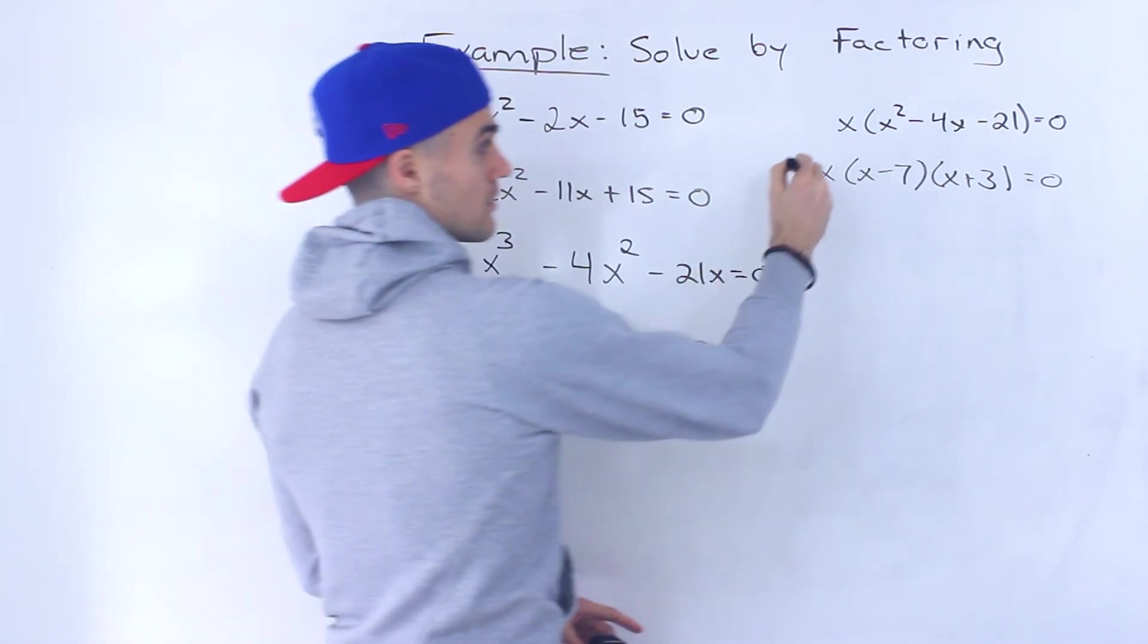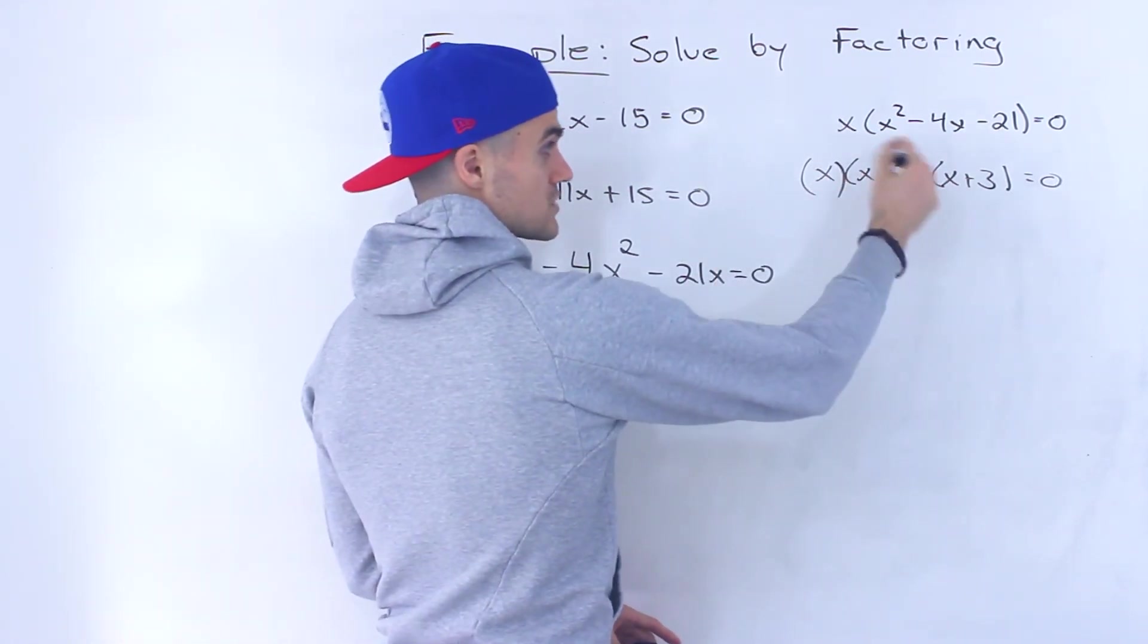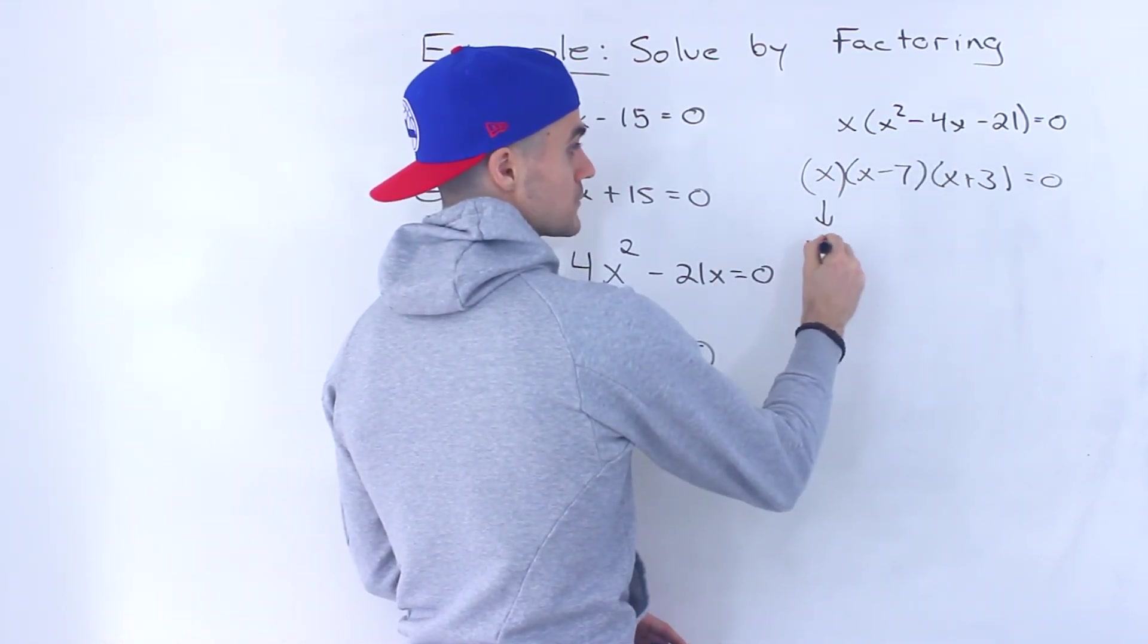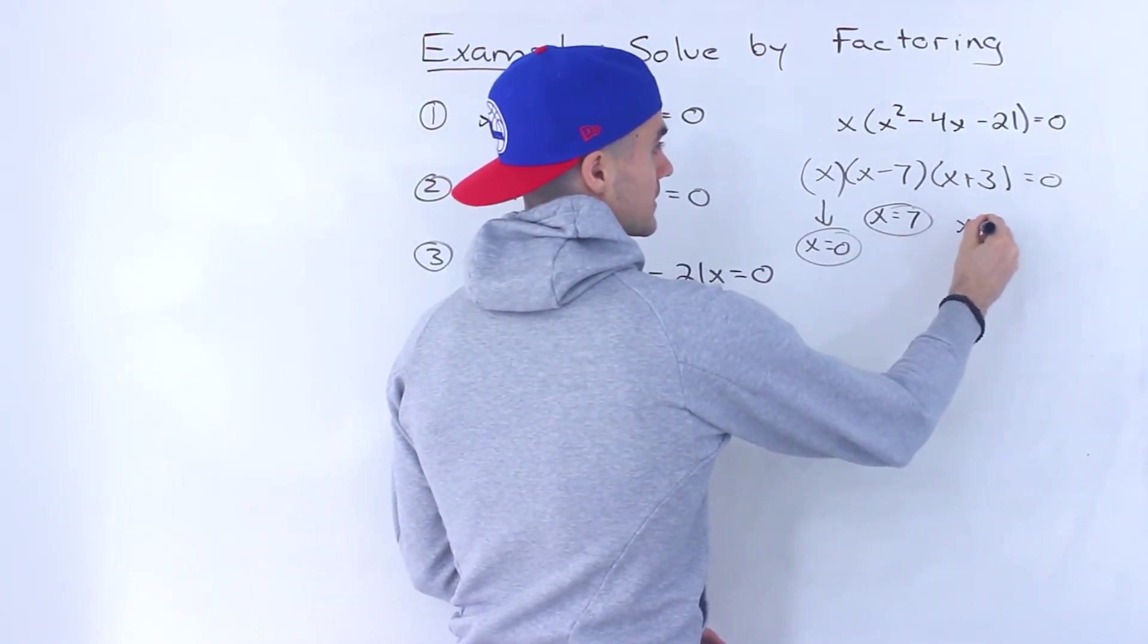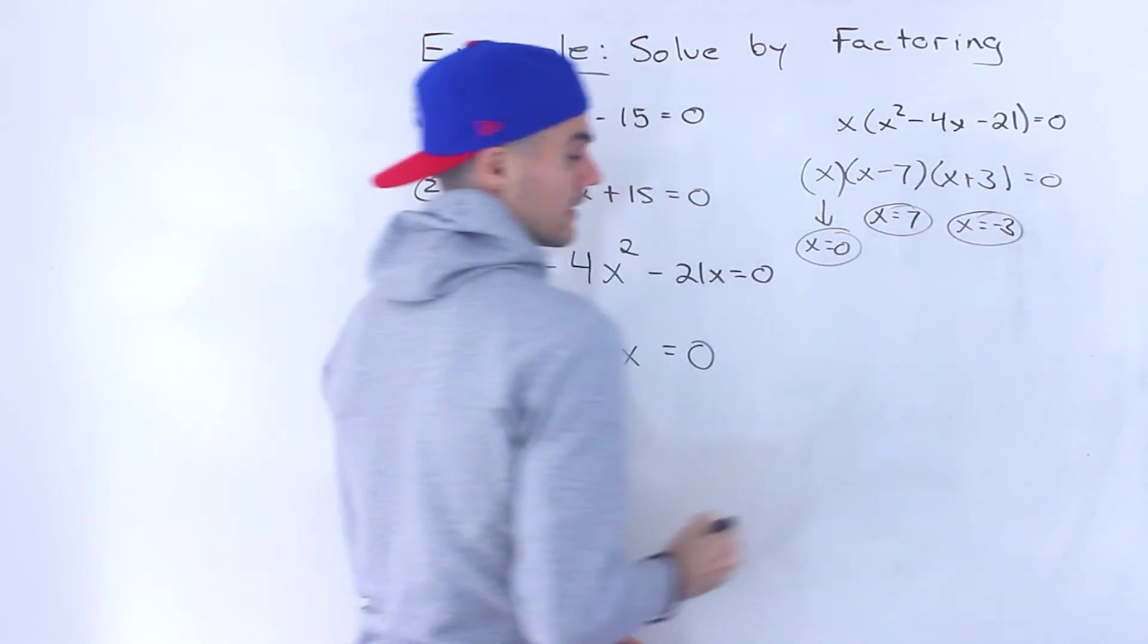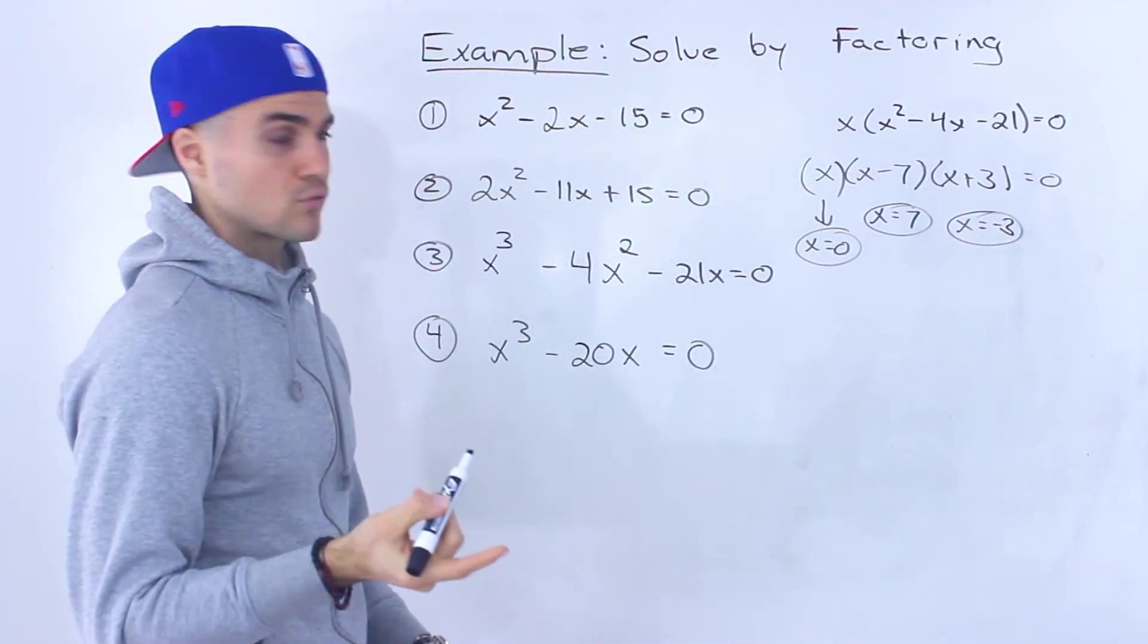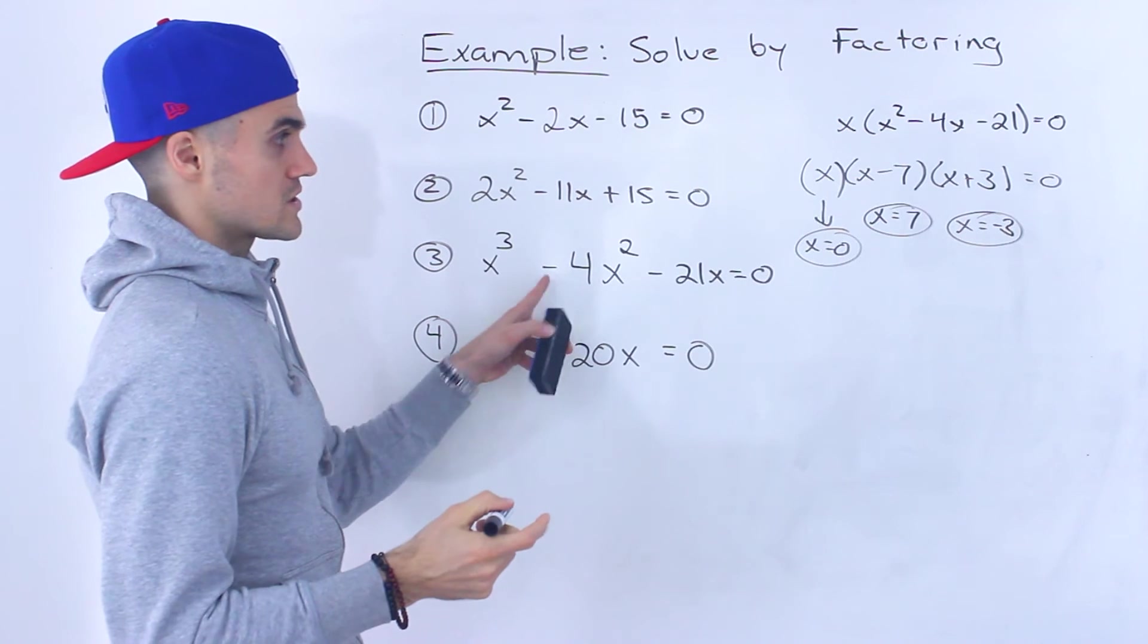Notice there's three brackets now. So this whole thing is going to equal 0 when x = 0, when x = 7, and when x = -3. So those are the three solutions to this equation.